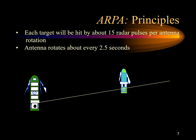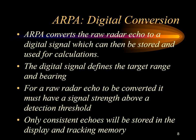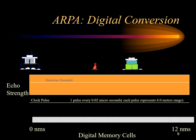When acquiring a target, the operator uses a joystick or tracker ball to place a marker over the desired target. The tracker ball or joystick is connected to an acquisition window placed around the target's position in the range and bearing memory cell. The ARPA converts the raw radar echo to a digital signal for storage and calculation. For a raw radar echo to be converted, it must have signal strength above a detection threshold; only consistent echoes will be stored.